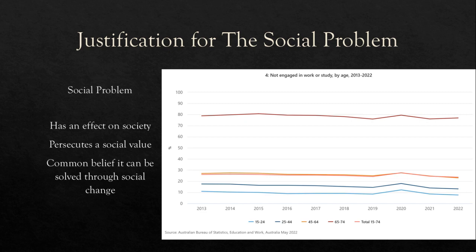Francis E. Merrill established a definition for social problems, explaining that a social problem is comprised of its effects on society, its persecution of a social value, and the belief that the problem can be alleviated through social action. Educational inequality contradicts the goal of Australian education facilities, as outlined by the Education Council, to ensure that young Australians of all backgrounds are supported to achieve their full education potential. Thus, educational inequality is the failure of this goal in equal access and distribution to education, opportunities, and academic resources.